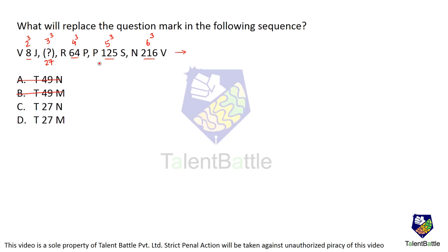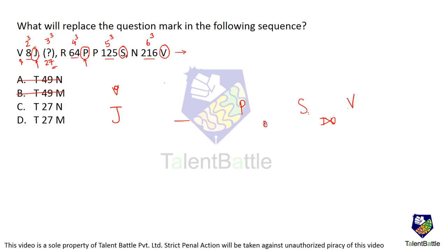The answer is between option C and D. If you observe the first letters, the first letter has to be T. Now observe the last letters: J, blank, P, S, and V. Between S and V — S, T, U, V — two are skipped. Between P and S — P, Q, R — two are skipped. So after J, K and L will be skipped and M will be written. The last letter has to be M, so the answer is option D: T27M.